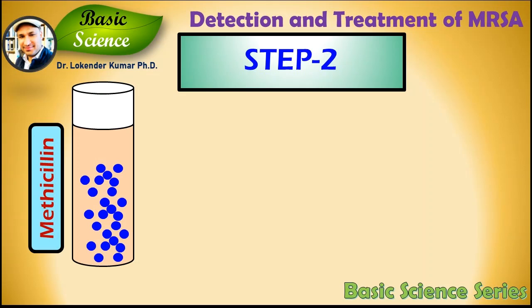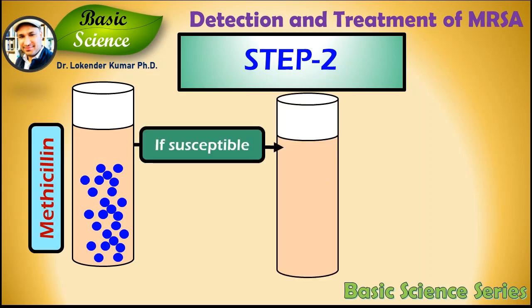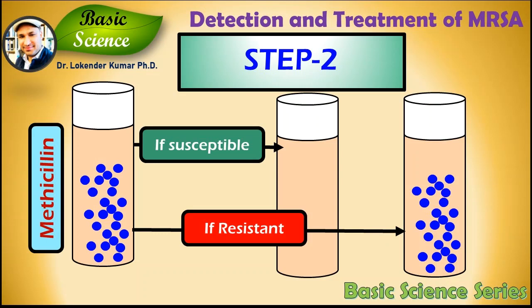Step 2 is antibiotic incubation. Since we are discussing the example of MRSA, we will use Staphylococcus aureus as the bacteria and methicillin as the antibiotic. Methicillin is added to the culture; other antibiotics can also be tested separately. If the bacteria is sensitive, it will not grow. If the bacteria is resistant, it will grow. Step 3 then involves detection of that resistant bacteria using bacteriophages.